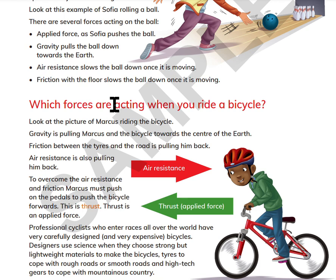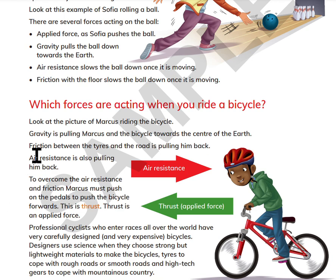Which forces are acting when you ride a bicycle? Look at the picture of Marcus riding the bicycle. Gravity is pulling Marcus and the bicycle towards the center of the earth. Friction between the tires and the road is pulling him back. Air resistance is also pulling him back. To overcome the air resistance and friction, Marcus must push on the pedals to push the bicycle forwards. This is thrust. Thrust is an applied force.